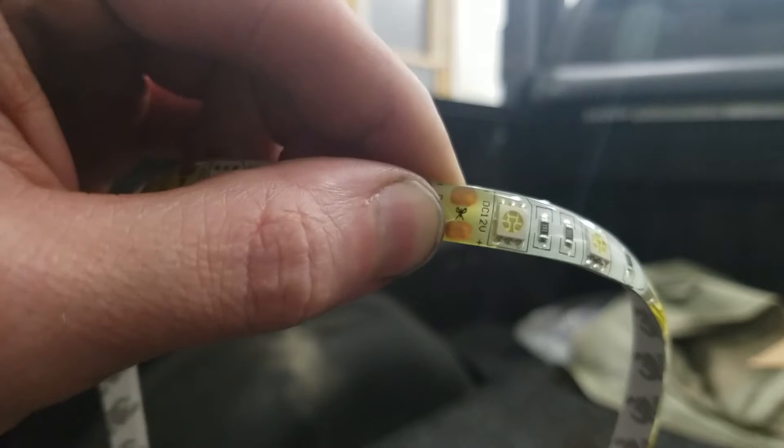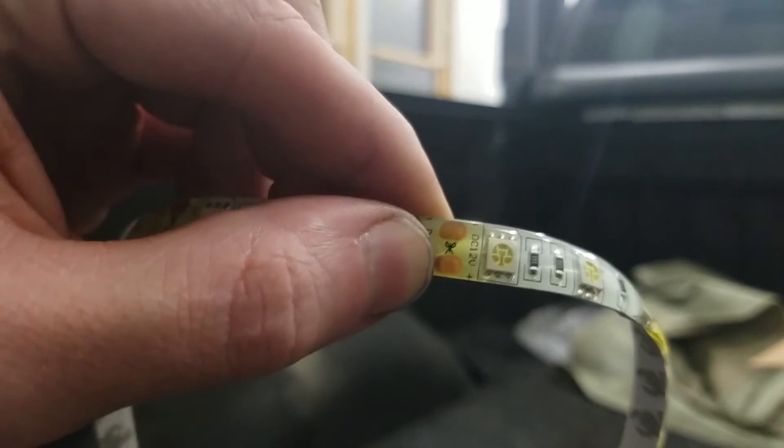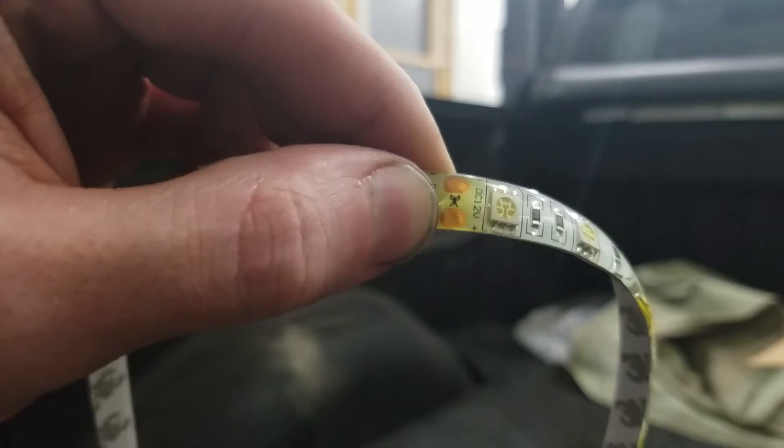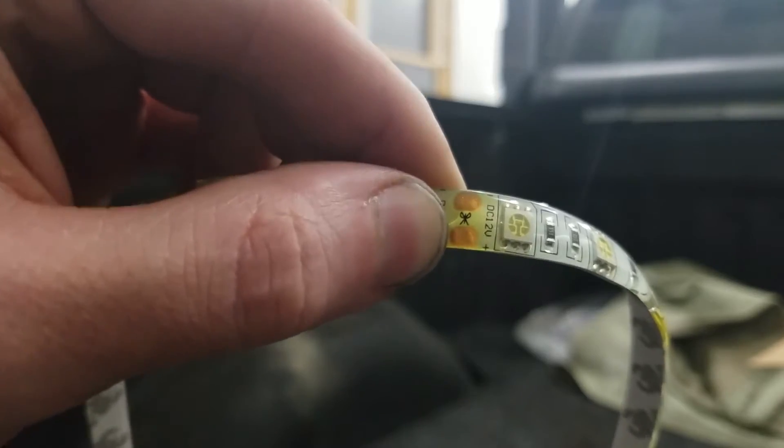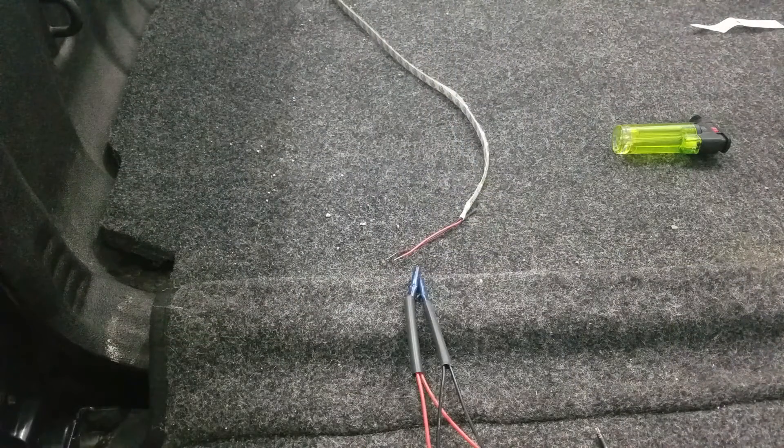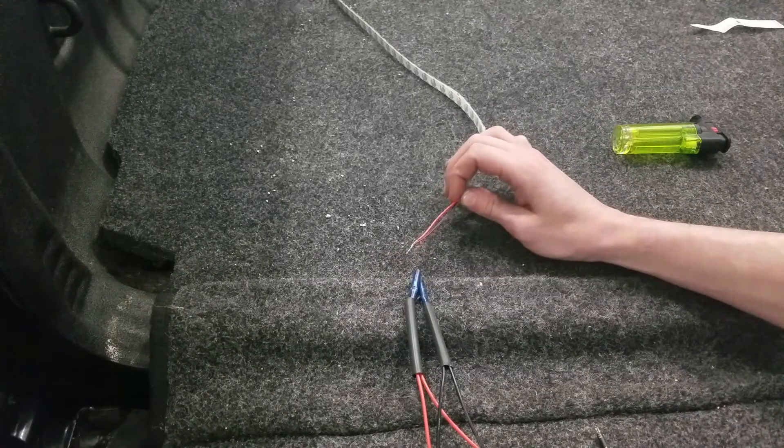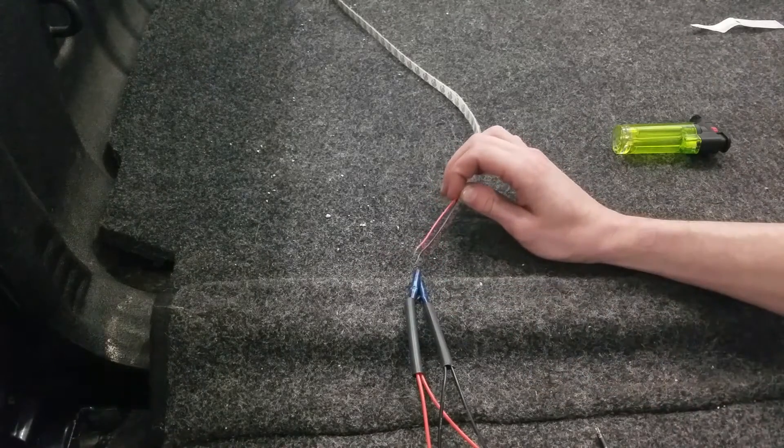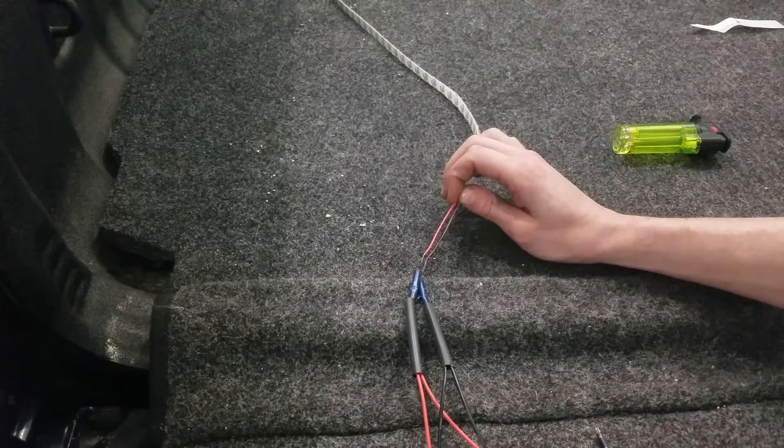So the LEDs that I got, you just cut to length. All you do is you look for the little scissor mark, cut it at the scissor mark, and you're good to go. So now what I'm going to do is I'm going to crimp my LED strip to my harness. The red is going to go to the red. The black is going to go to the black.